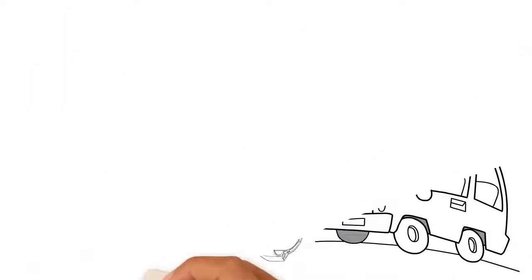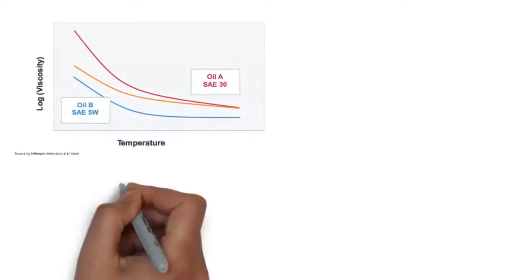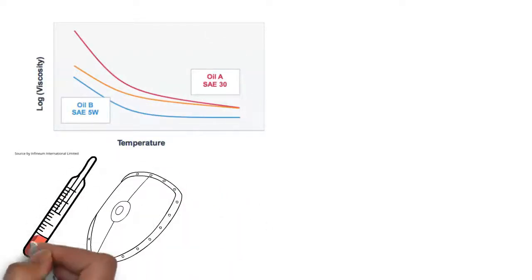Here's the example. Oil B, the thinner base oils, provide good low temperature properties but cannot provide protection at high temperatures.